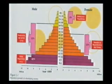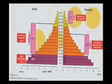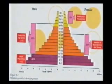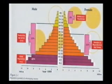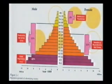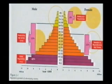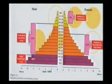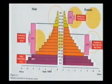The age-sex pyramid of Pakistan shows a very high proportion of young population — about 43% are below age 15 — followed by about 53% who are in the economically productive ages. About 22% of females are in the reproductive age group 15 to 49, and there are very few, about 4%, who are above age 60.